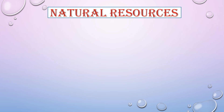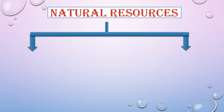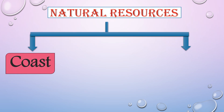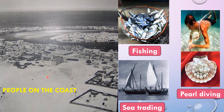Natural resources can be classified on the basis of where people live — people who live on the coast, and people who live inland. People who lived on the coast, that is land near the sea, made a living from fishing, pearl diving, and sea trading. They made boats of wood and traveled on the seas to trade.